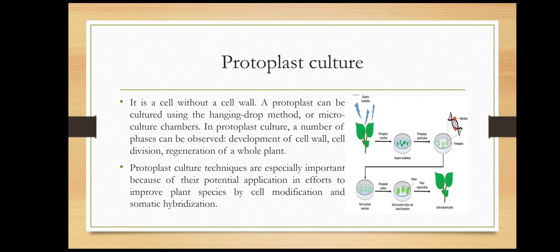The next type is protoplast culture. A protoplast is a cell without a cell wall. A protoplast can be cultured using the hanging drop method or micro culture chambers. In protoplast culture, a number of phases can be observed: development of cell wall, cell division, and regeneration of a whole plant. Protoplast culture techniques are especially important because of their potential applications in efforts to improve plant species by cell modification and somatic hybridization.